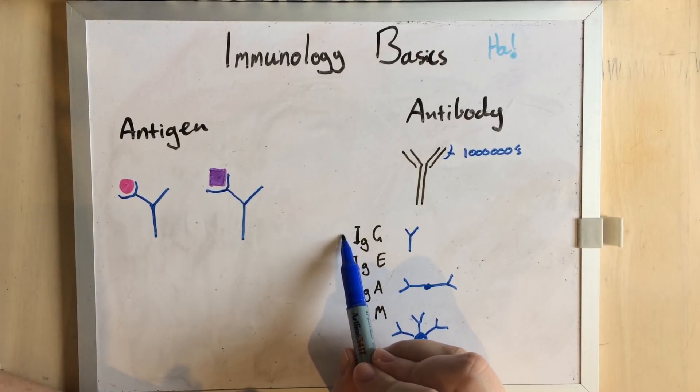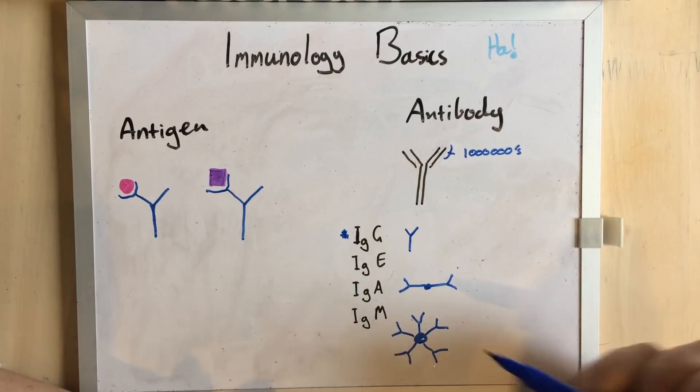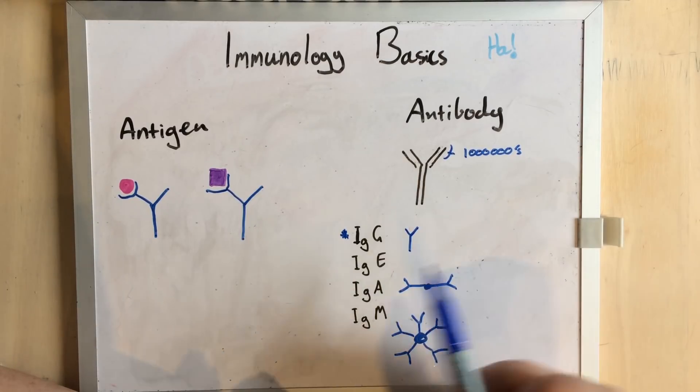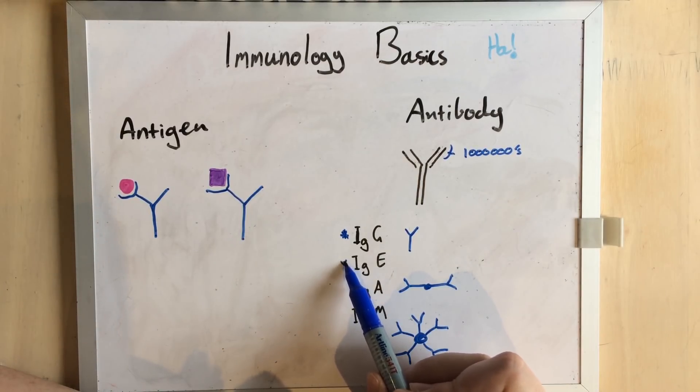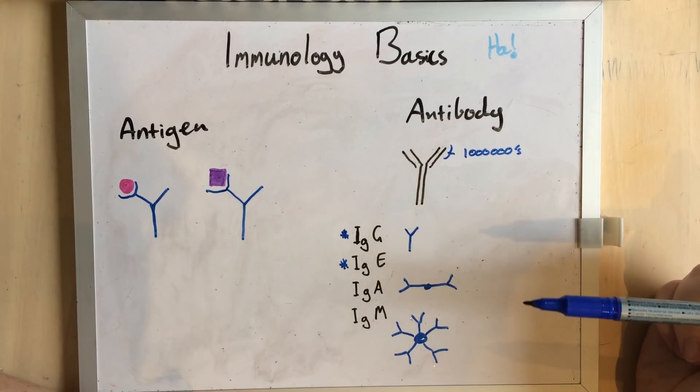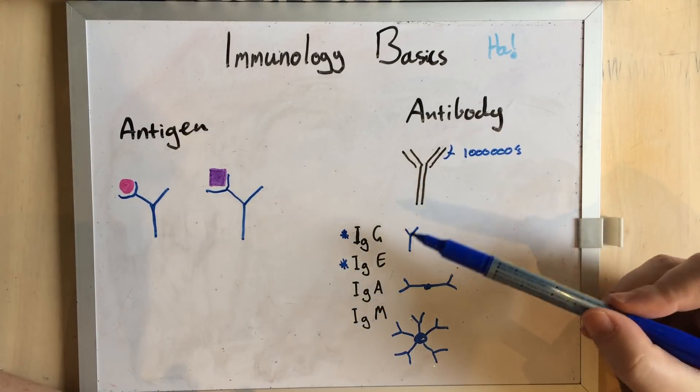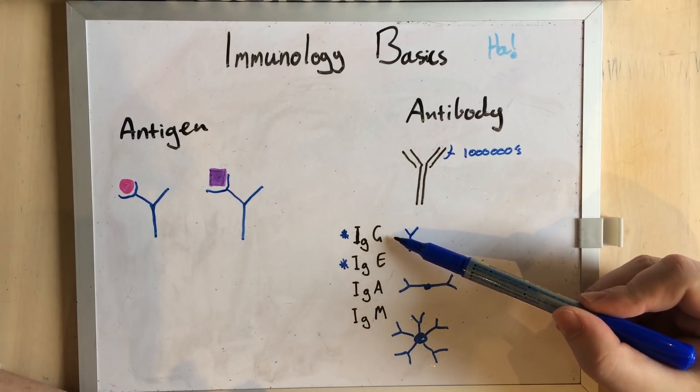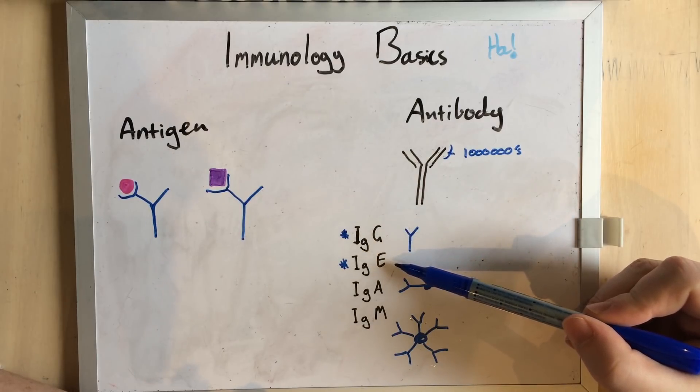Now, IgG is the one we measure in blood. It's the most common. But it's IgE that's responsible for our allergic symptoms. So if we're doing a blood test for allergies, we're usually measuring IgG when it's IgE that's responsible.